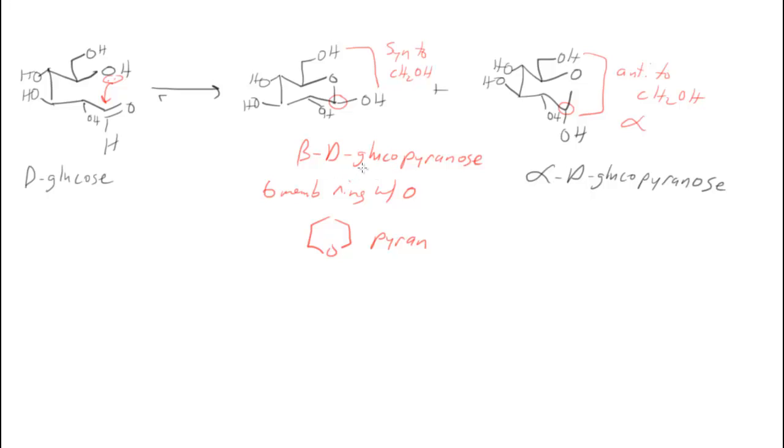Now, when this forms, it doesn't actually form in equal amounts. It forms 63% beta and 37% alpha-D-glucopyranose. And why should we care? What's important about this?